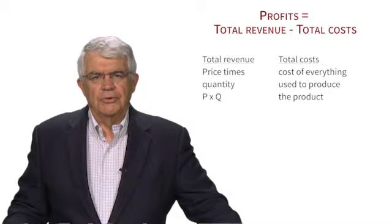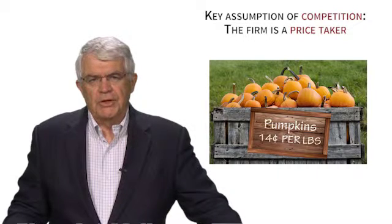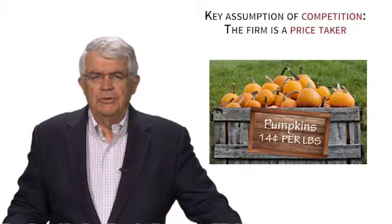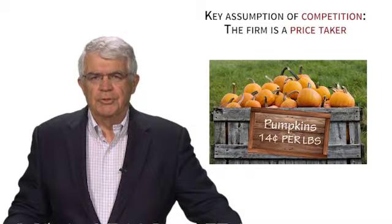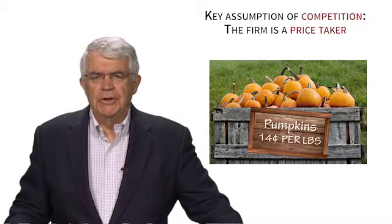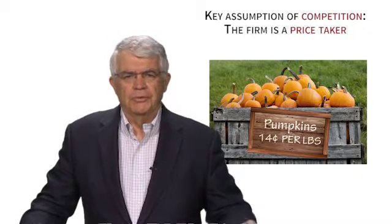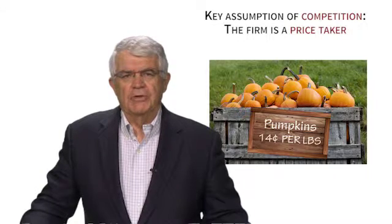When we think about this decision of the farmer deciding how much to produce, it's important to recall that the assumption of competition means that all the firms, all the farmers in this market, are price takers. That is, they look out in the market and see what the price of pumpkins is — one dollar, two dollars, whatever it happens to be — and then make a decision on how much to produce.